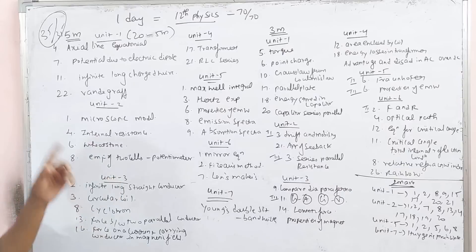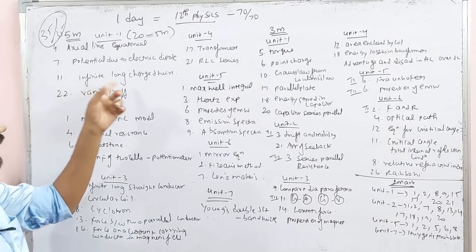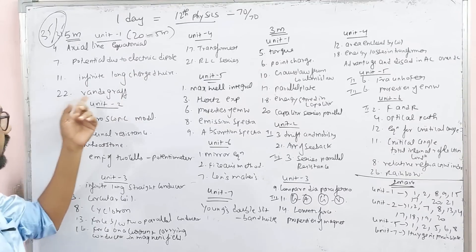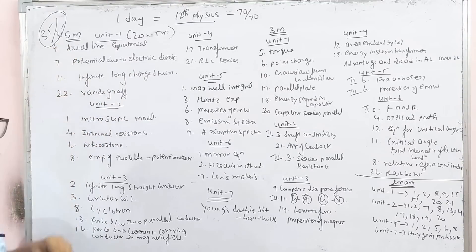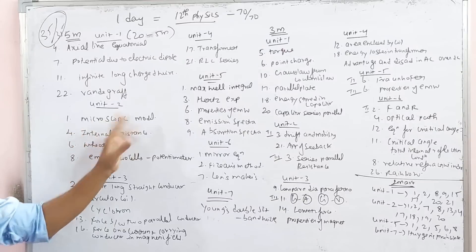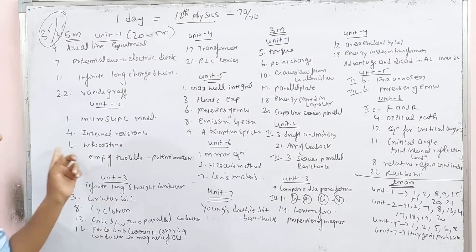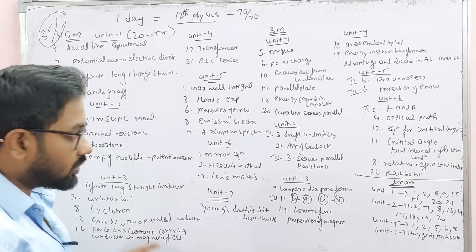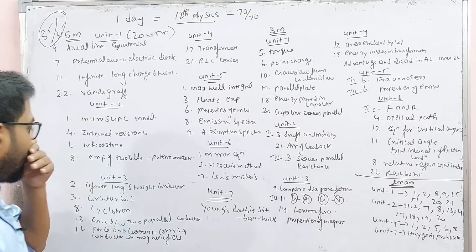Unit 1 is Axial Line and Equatorial Line, Potential due to Dipole, Infinite Long Charged Wire. Unit 2 is Microscopic Model of Current, Internal Resistance of Cell Using Voltmeter, Wheatstone Bridge, EMF of 2 Cells using Potentiometer.